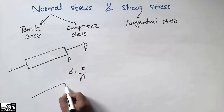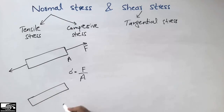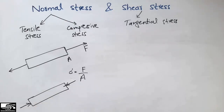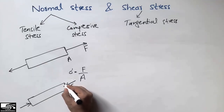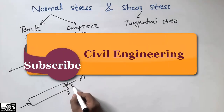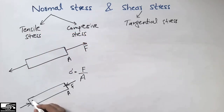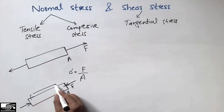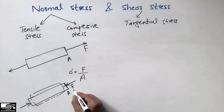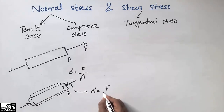The other type of normal stress is compressive stress. It is the type of stress in which the member compresses. The force is applied perpendicular to the surface area, but it tends to compress the member. The member decreases in size and follows a compressed shape — this stress is called compressive stress.